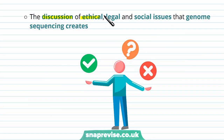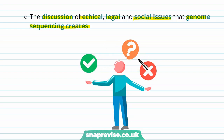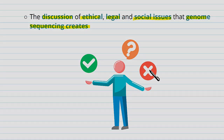It also aims to discuss some of the ethical, legal, and social issues that genome sequencing creates. These will be discussed in more detail in later videos, but it raises questions like: should we work out what our DNA contains? Do people want to know? If we did know, will some people get better healthcare than others? Will we be able to afford more personal healthcare? Lots of different questions like this.